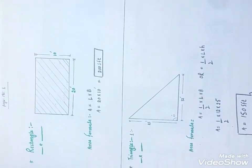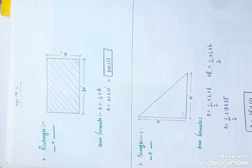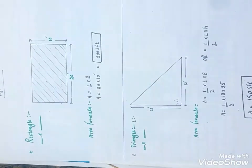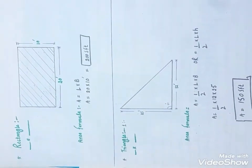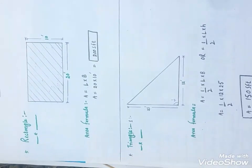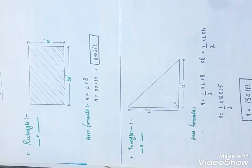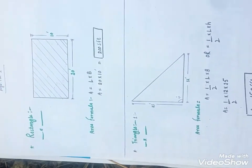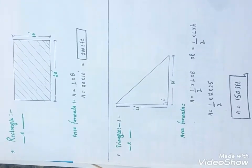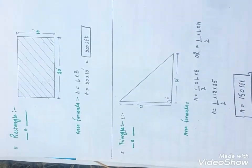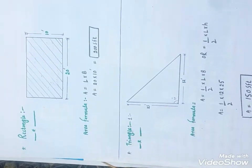Now let's start the topic. The first shape shown is a rectangle, and the formula is also given. The second shape is a triangle, and the formula for the triangle is also provided. Now we turn to the next page.